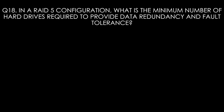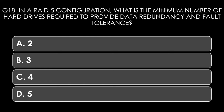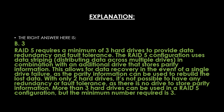Question eighteen. In a RAID 5 configuration, what is the minimum number of hard drives required to provide data redundancy and fault tolerance? Options: two, three, four, or five. The right answer is three. RAID 5 requires a minimum of three hard drives, using data striping across multiple drives combined with parity information stored on an additional drive, allowing data recovery in the event of a single drive failure. More than three drives can be used, but three is the minimum.